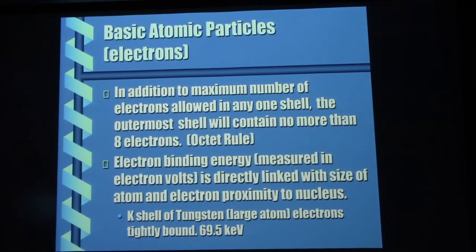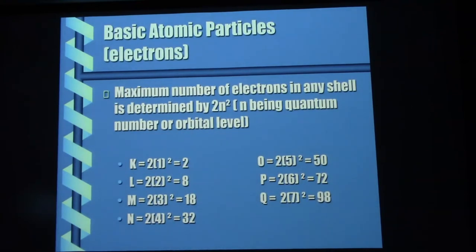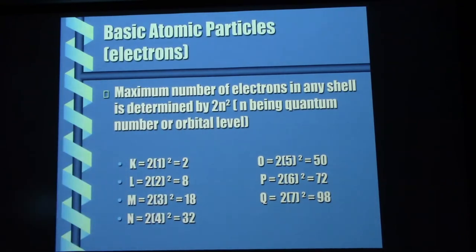In addition to the number of electrons allowed, the outermost shell never contains any more than eight electrons. Even though — for example — the P shell can hold 72 electrons total, once the P shell has eight electrons in it, it's going to start dumping some of those electrons out to the Q shell, until the Q shell has eight electrons. Then once the Q shell has eight, we can start backfilling the P shell. That's the way this works as you're adding more electrons.